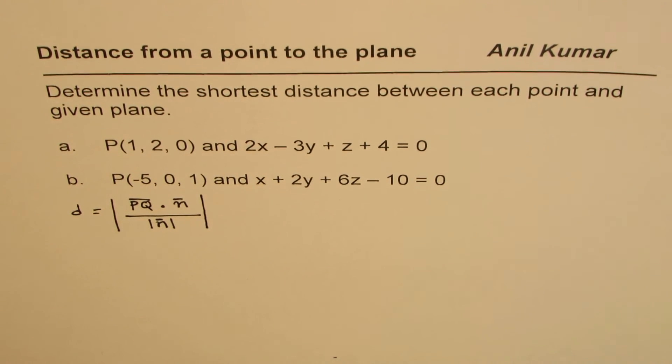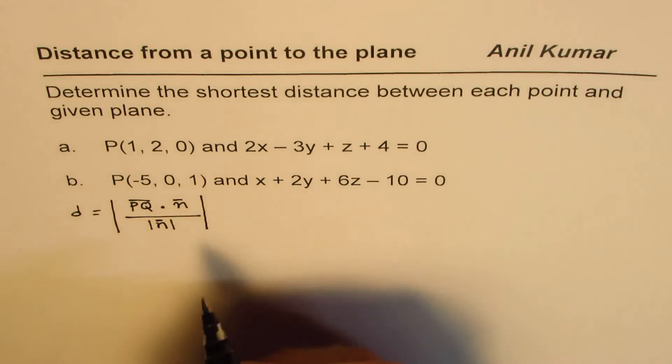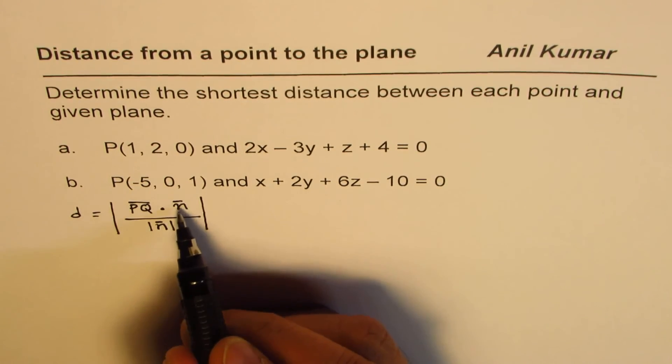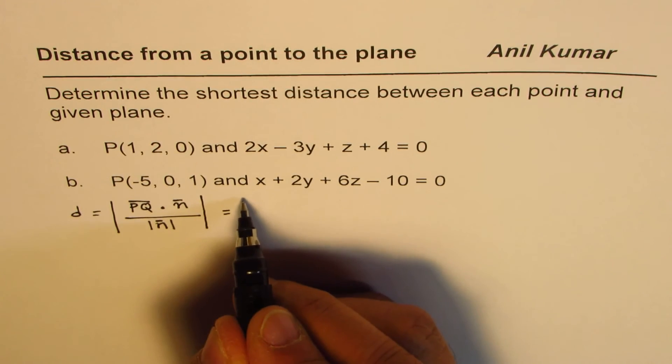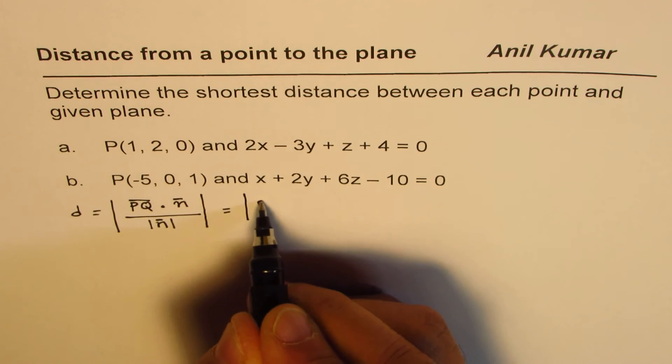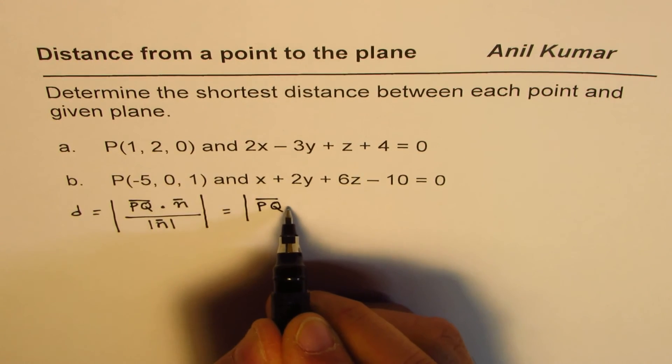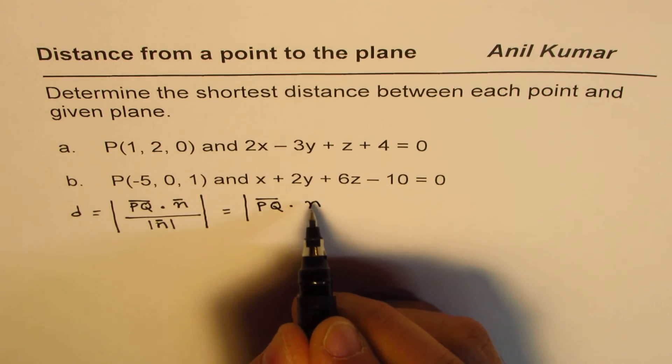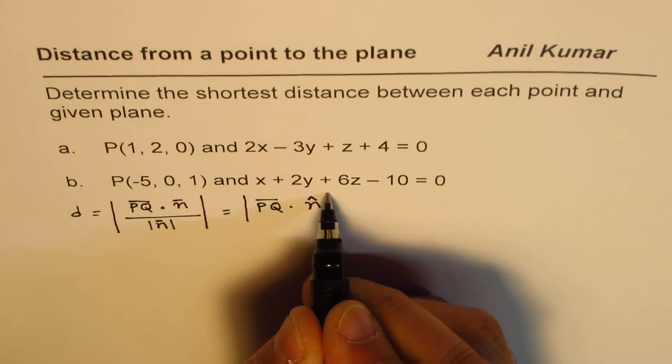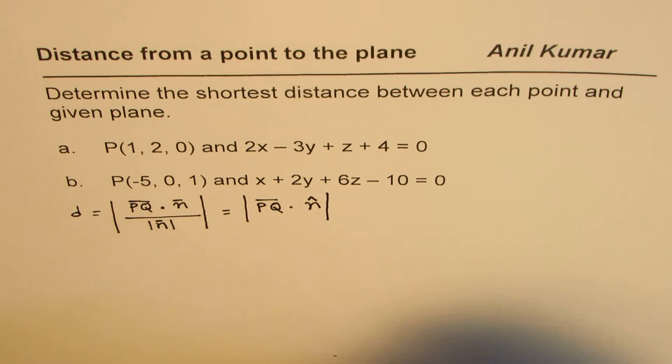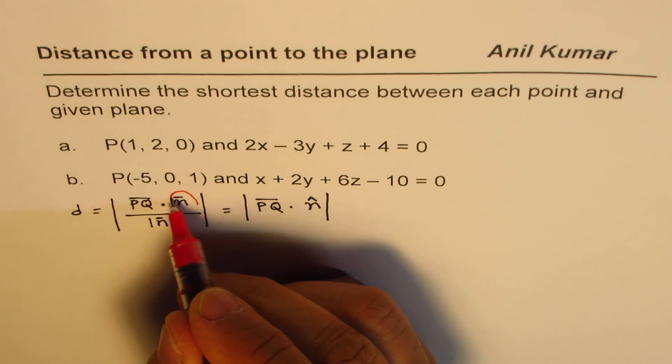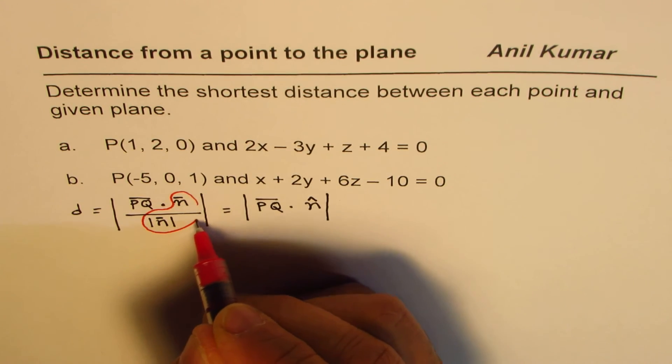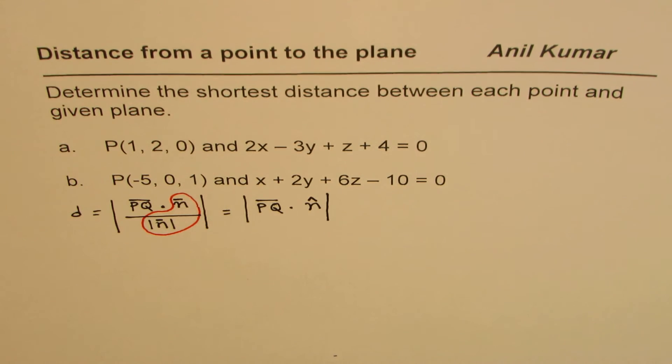So that gives you one way to find the distance of a point from the plane. Basically, if you see, n divided by magnitude of n is a unit vector. So this equation could also be treated as pq dot unit vector n. As this ratio is the unit vector along the direction of the normal for the plane.